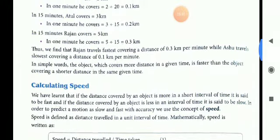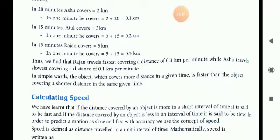So which one is faster and which one is slower? Now you can say very clearly Rajan is fastest and Ashu is slowest.